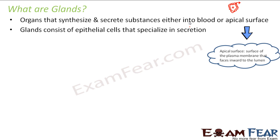These glands selectively take up some materials from the blood. Blood is flowing throughout the body and contains many different things. The gland selectively chooses certain materials, takes them up, processes them, and produces chemicals. These chemicals are then secreted either into the blood or into the apical surface of cellular components.